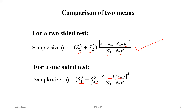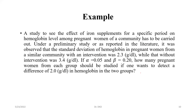The basic difference between the two formulas is that for the two-sided test we use z1 minus alpha by 2, and for the one-sided test we use z1 minus alpha. We will try to understand this with the help of an example.